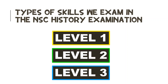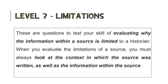Each skill will fall within a specific category of questioning. There are three categories. Level 1 questions will test your ability to extract evidence from various sources. Level 2 questions will test your ability to interpret evidence from various sources. And Level 3 questions will test your ability to evaluate a source's reliability, usefulness and limitations, as well as test your ability to compare similarities and differences from various sources. So let's take a look at Level 3 Limitations questions.